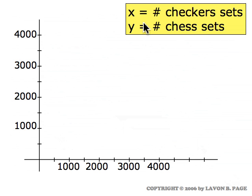We'll let X represent the number of checker sets they make daily and Y the number of chess sets. The board constraint is that they have a limit of 1900 boards available daily so that means the number of games they make, checker sets plus chess sets, cannot exceed that limit.